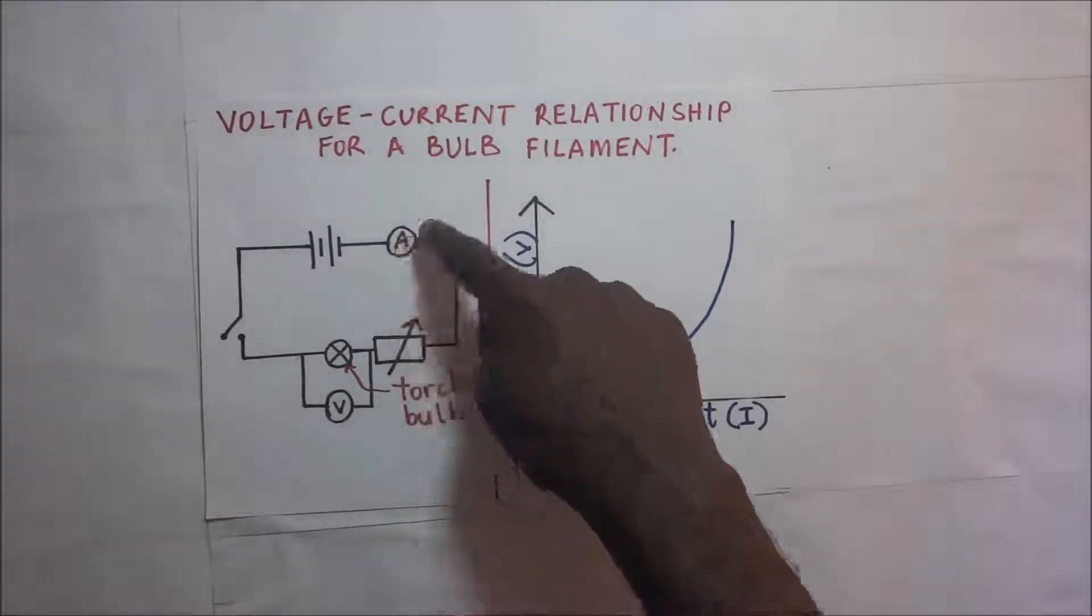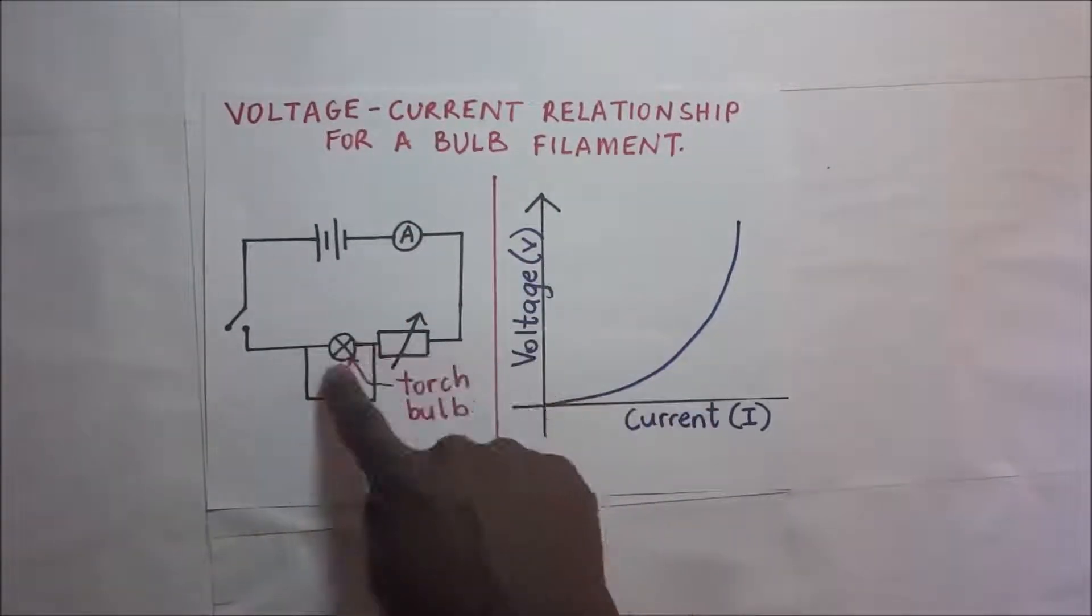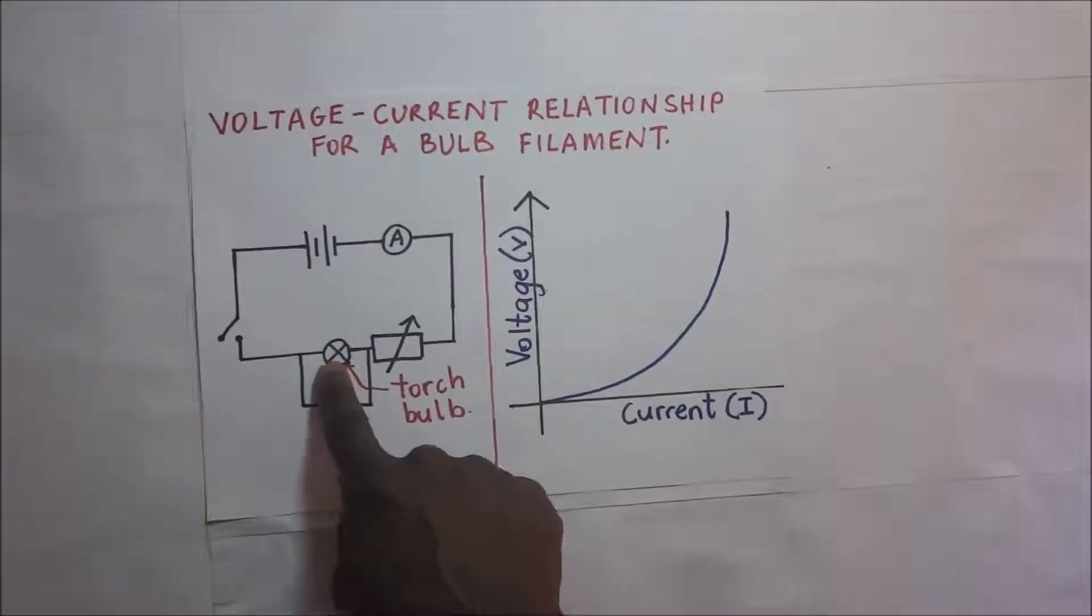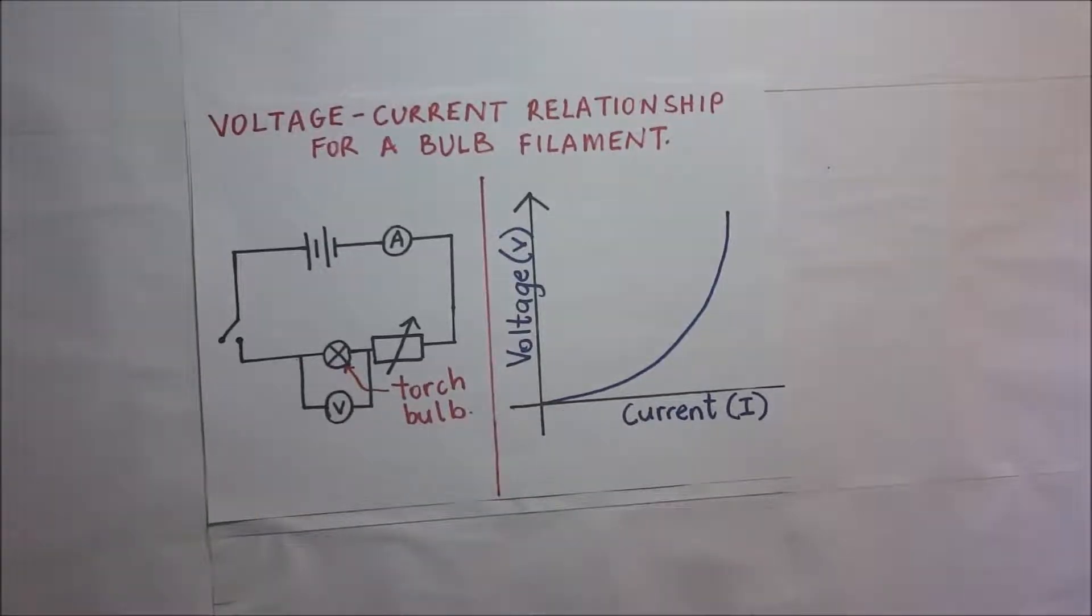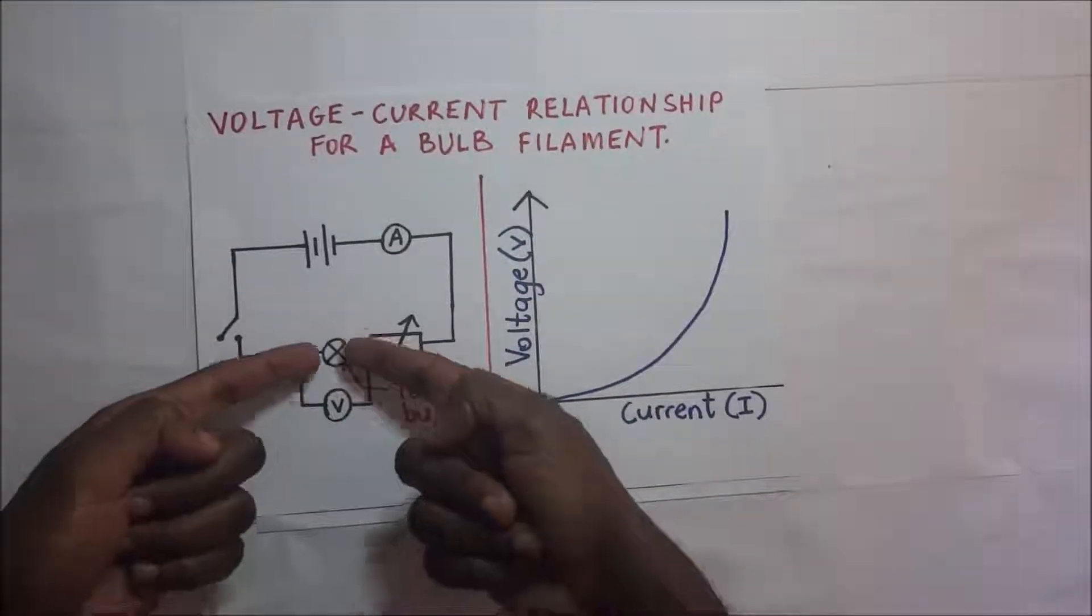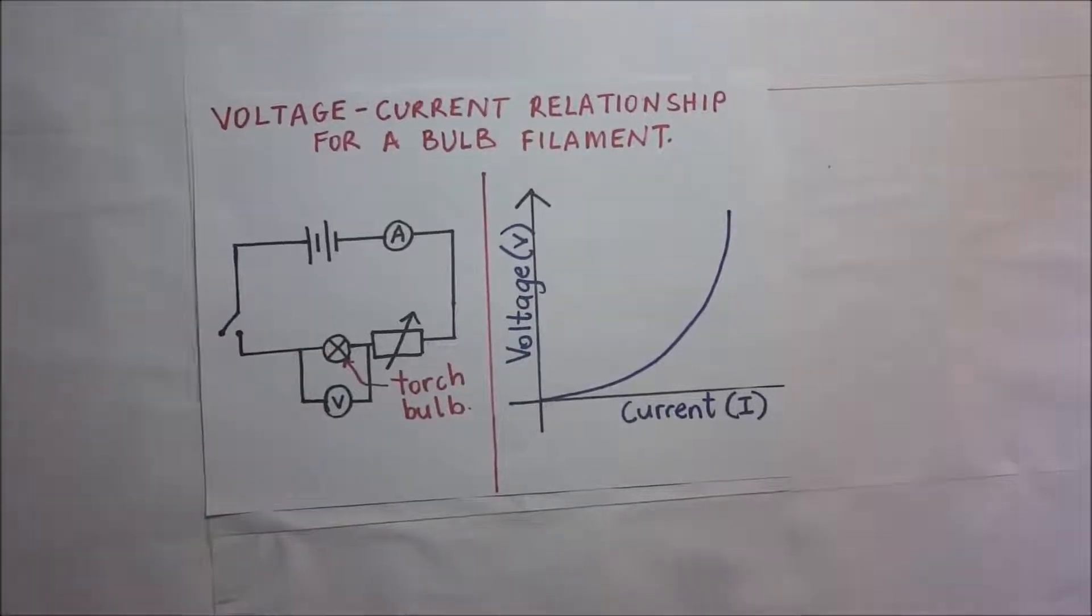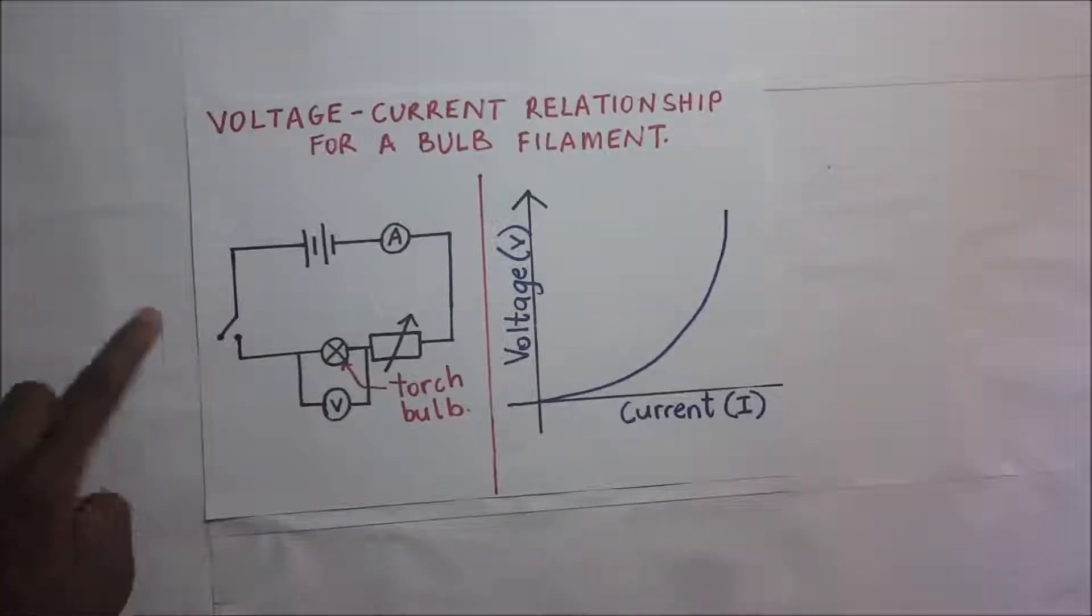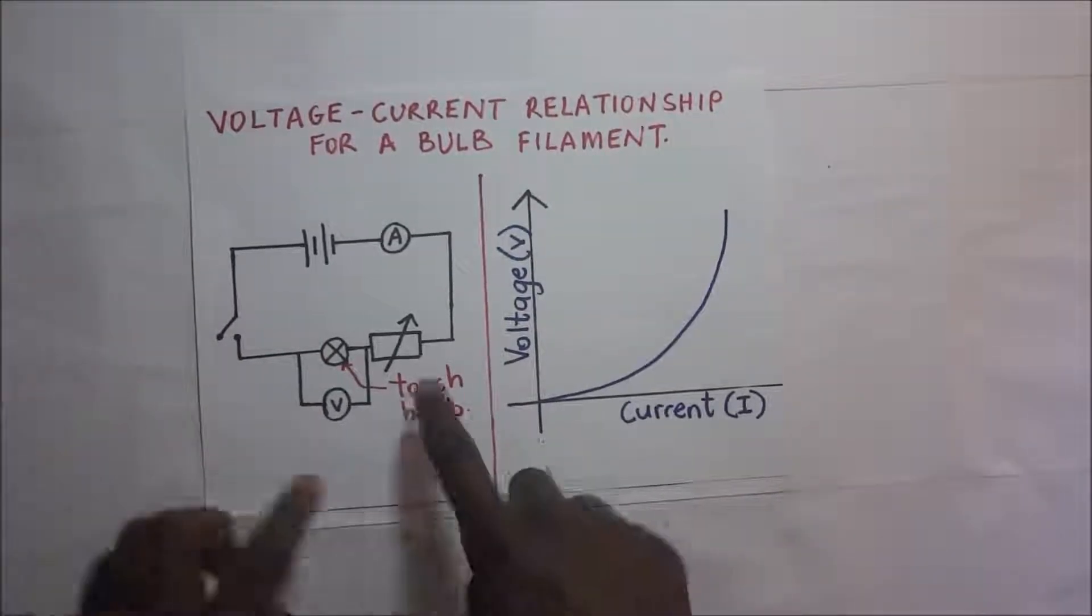And this ammeter will be giving us the current that is flowing through the filament. So we will be examining or analyzing the current-voltage characteristics of this filament, the filament inside this bulb. So when we close the switch, we will first of all adjust this rheostat.